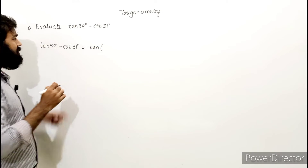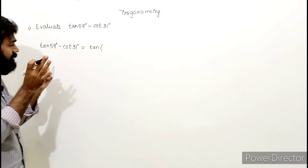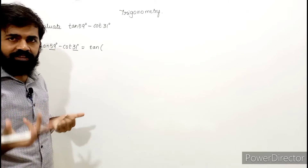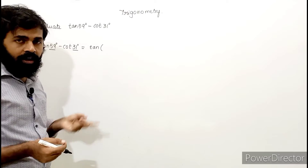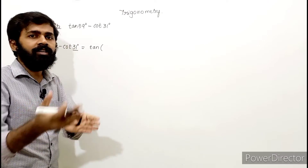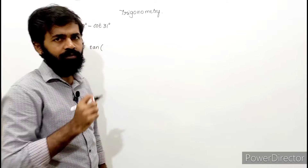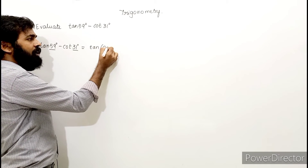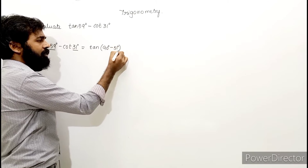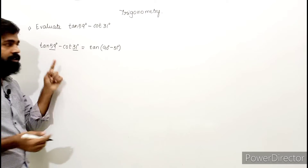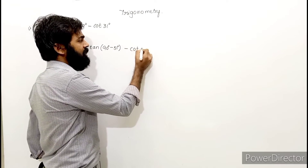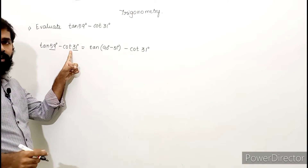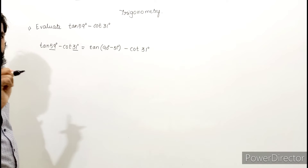Notice that 59 plus 31 equals 90. In such cases, convert one term into another by applying 90-minus-theta values. I'll keep tan as it is and write 59 as 90 minus 31, since 90 minus 31 is 59. I'll keep cot 31 degrees as it is — you only need to modify one term.